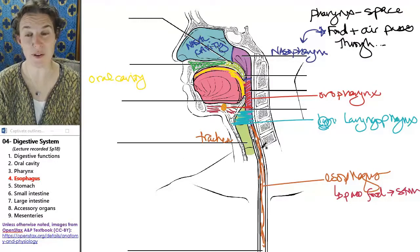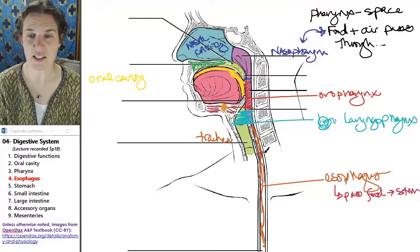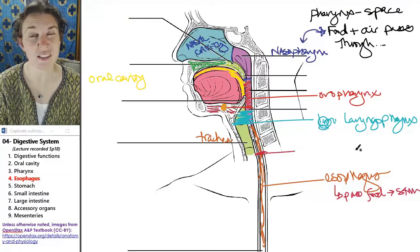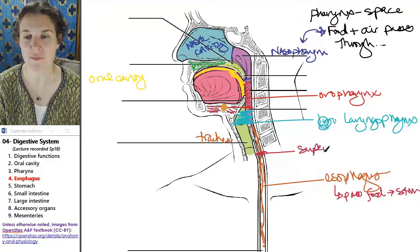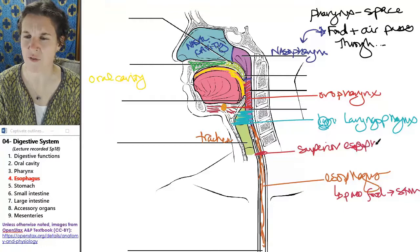At the superior end of the esophagus, there is a constriction of muscle, and it's called the superior esophageal sphincter.